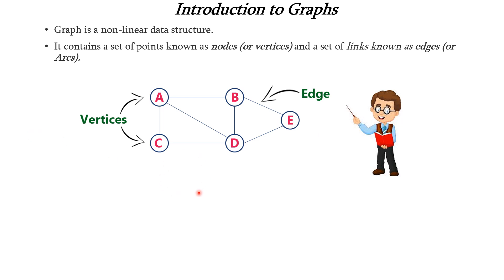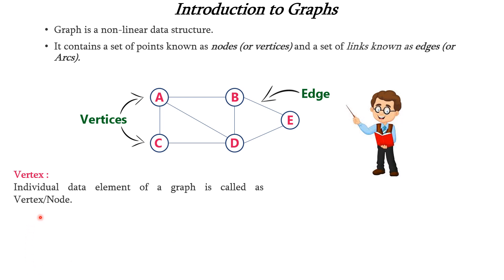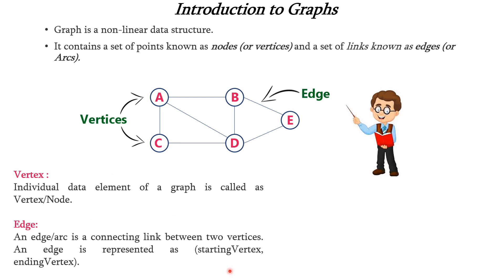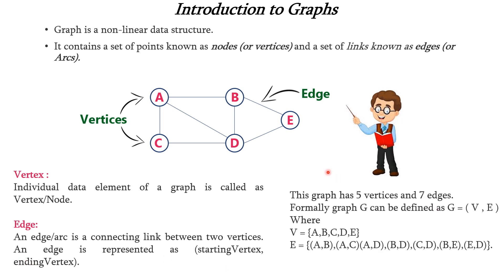This is an example of a graph where the circled entities are called as vertices and the lines are called as edges. Formally, an individual element of a graph is called as a vertex or node, and an edge is a connecting link between any two vertices. An edge can be represented as a pair comprising a starting vertex and the ending vertex. Formally, you can represent a graph as G = (V, E), where V is the set of vertices and E is the set of edges.